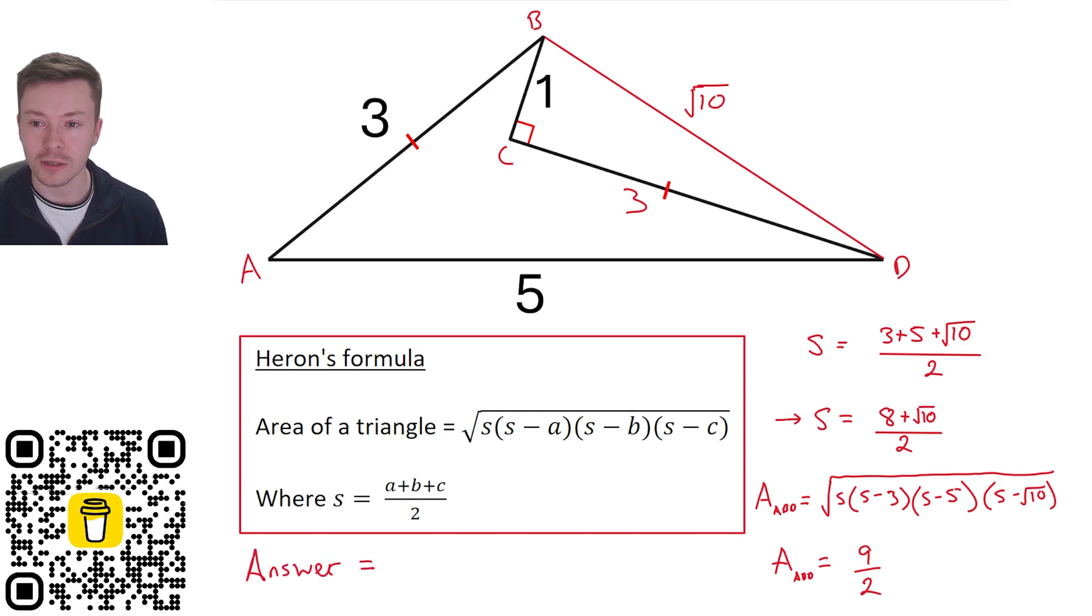Now the final answer for this is we've got the nine over two and we have to subtract this triangle here, triangle BCD. We can work that out by a half times by one times by three, and it gives a very nice answer of three units squared, whatever the units are.